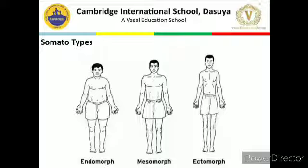Now we will discover somatotypes. There are three types of body all over the world — height may be different, length may be different, size may be different, but three types of body exist in Nepal, in Russia, in Japan, in India, in every nation. First is endomorph, second is mesomorph, third is ectomorph. Endomorphs are a little bit fatty, mesomorphs have an athletic body, and ectomorphs have a thin and tall body.